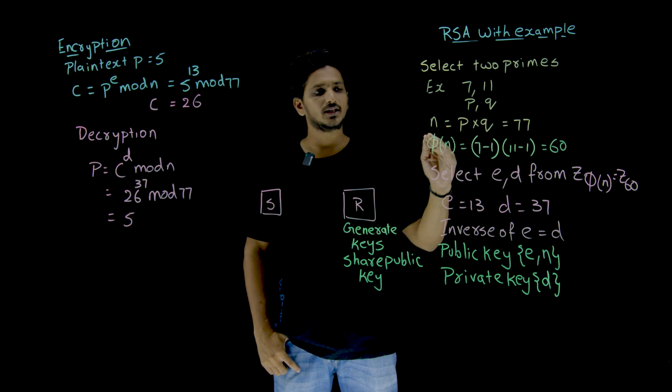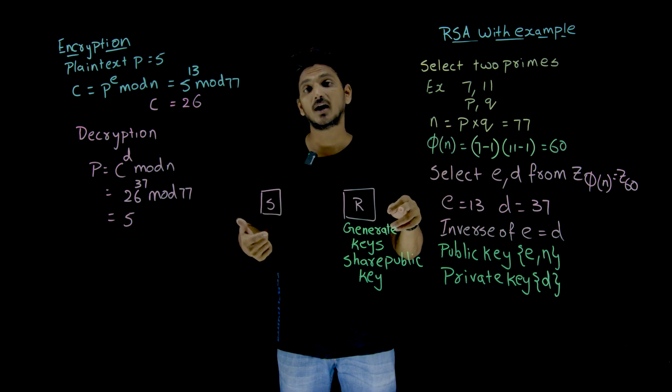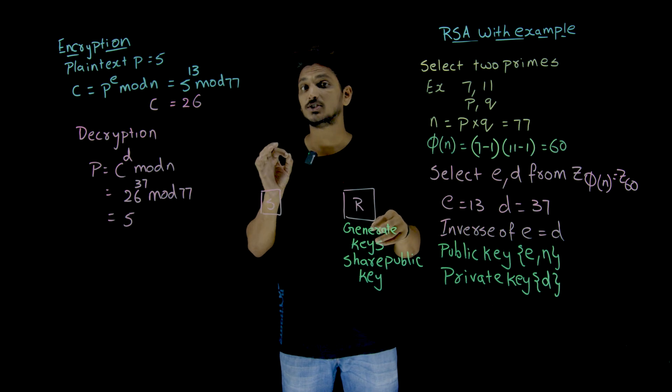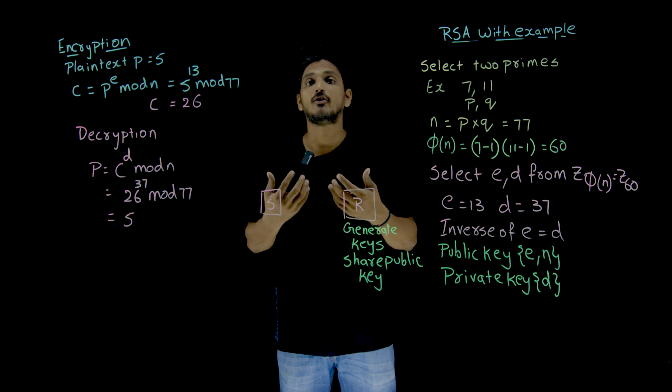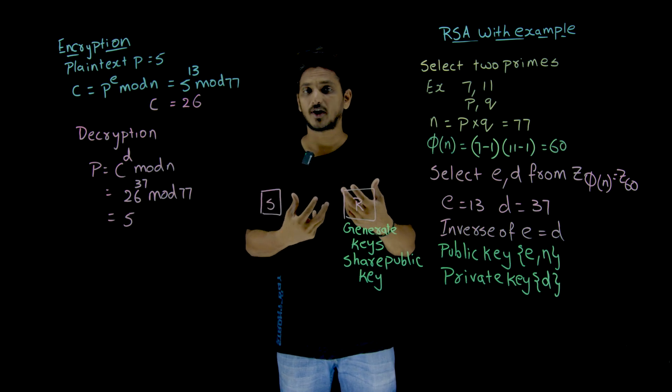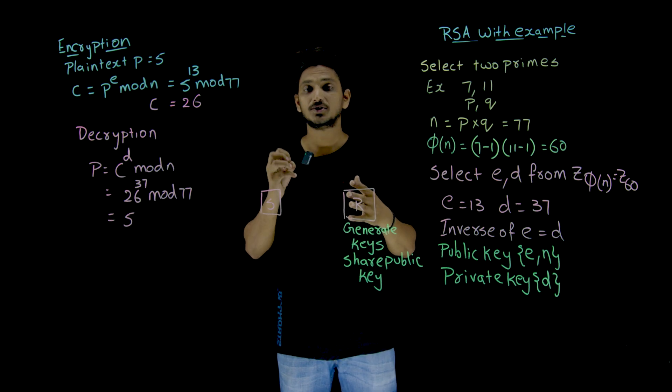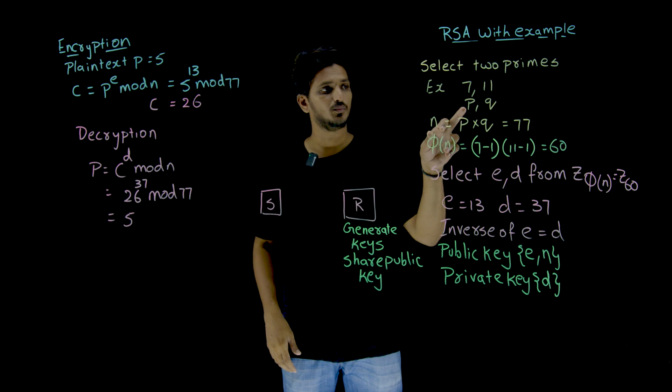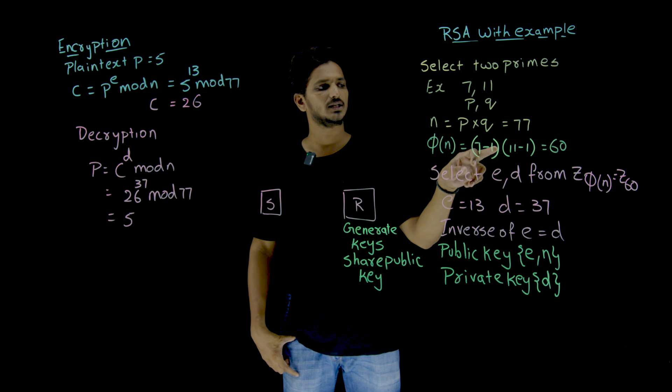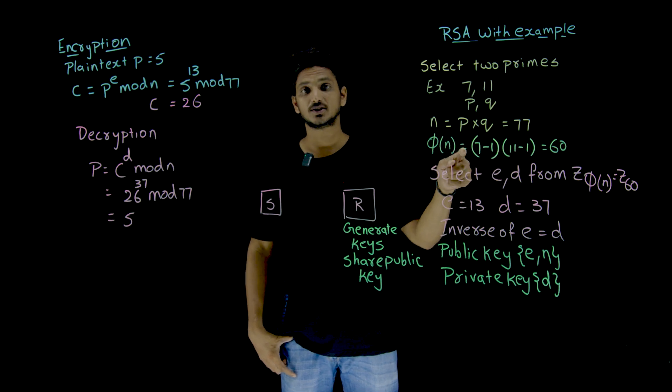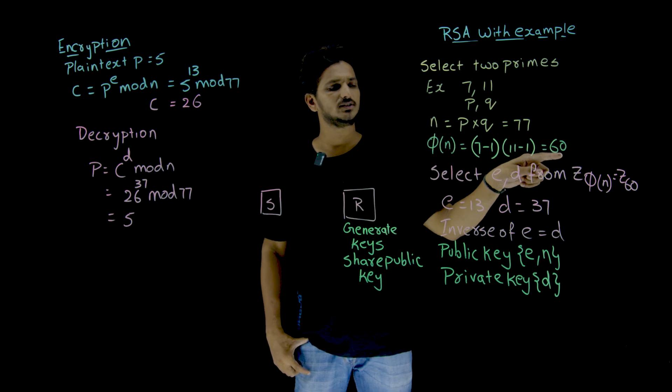After that, we need to find the Phi of n. Because we know these prime numbers P and Q, we can easily find the Phi of n. Otherwise, it is not possible. Phi of n needs the prime factors. Prime factors are not possible to identify for large numbers. So if you are having prime factors, Phi of n is equal to (7 minus 1) times (11 minus 1). Why you got this was discussed when we covered Euler's Phi function. So the Phi of n value is 60.